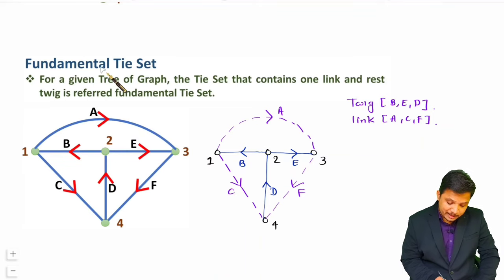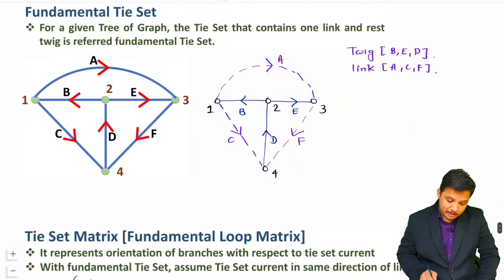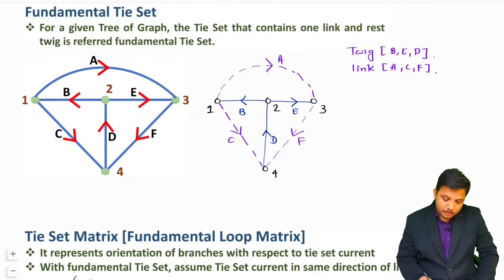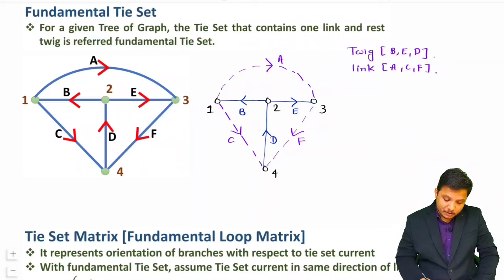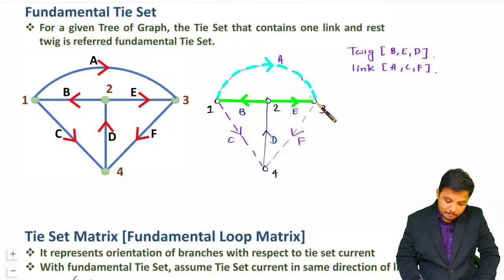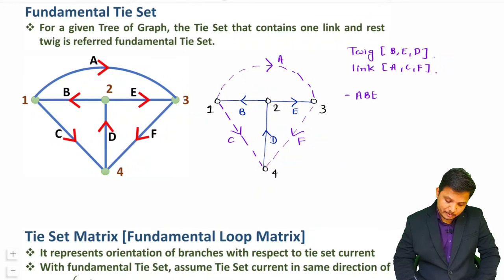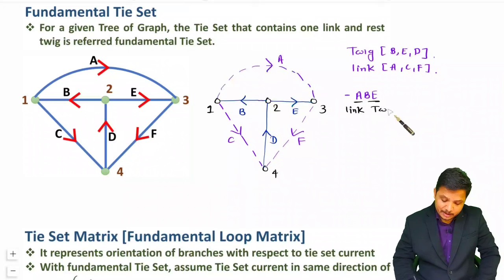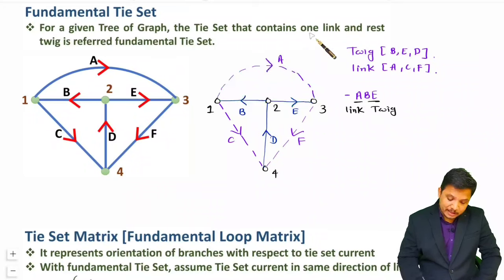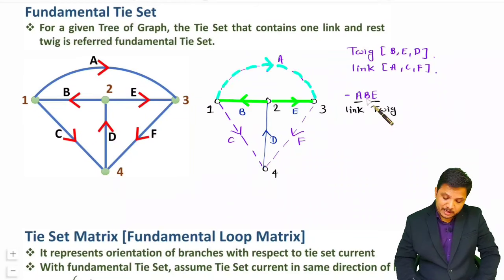Now let us identify fundamental tie sets. A fundamental tie set should cover only one link and the rest should be twigs. When you consider link A, then loop AEB gives one fundamental tie set — link A and twigs B and E. So as per the definition it contains one link and rest twigs, making this a fundamental tie set.